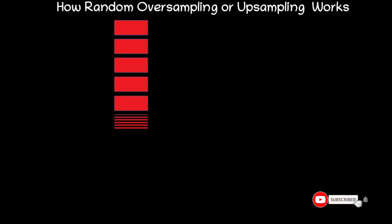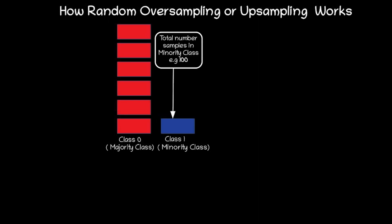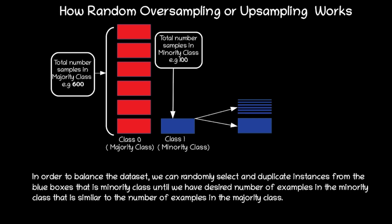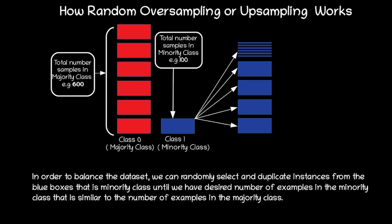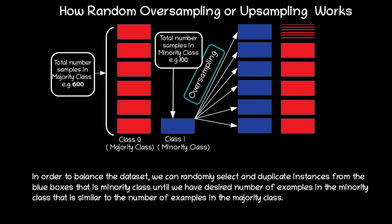Let's see how random oversampling or upsampling works. Consider a scenario where we have red boxes representing the majority class, class 0, and blue boxes representing the minority class, class 1. Suppose there are 100 data samples belonging to the blue boxes and 600 data samples belonging to the red boxes. In order to balance our dataset, we randomly select and duplicate instances from the minority class until we have the desired number of examples equal to those in the majority class. Now we can see the total number of examples in both classes is the same.